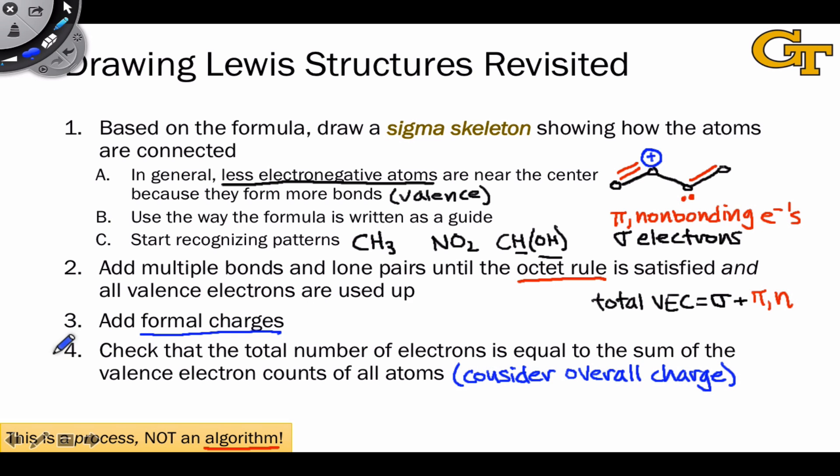This last check is really important because it provides us with that evaluation step in the reasoning process that allows us to potentially revisit step one, if needed, to generate a new sigma skeleton. So really, you should think about drawing Lewis structures as an iterative process where when you get to the end, you want to evaluate, is the octet rule satisfied, does the structure make sense, and is the structure reasonable?